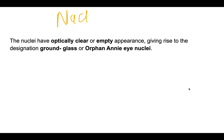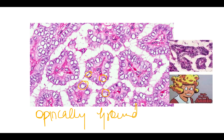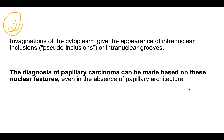The nuclear features include: first, optically clear nuclei — also called ground glass nuclei or orphan Annie nuclei — where the chromatin is dispersed to the periphery and the nucleus itself appears white and clear. The name 'orphan Annie nuclei' comes from a cartoon character whose eye representation resembled these nuclei.